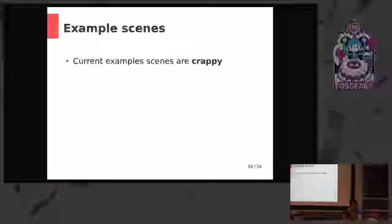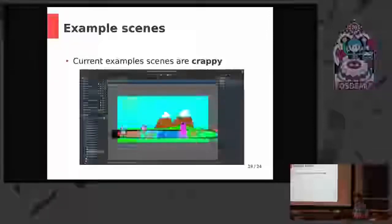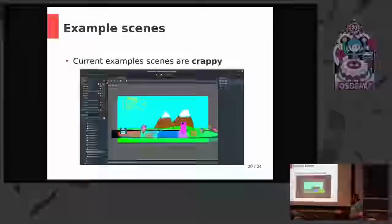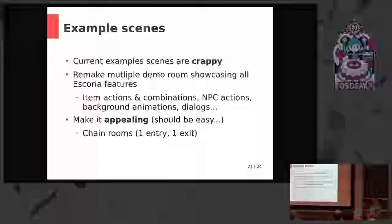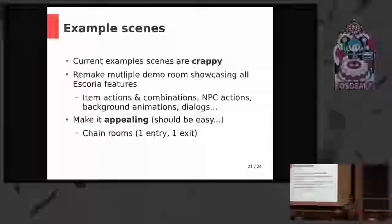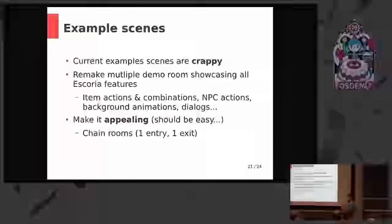To finish, the example scenes. Currently Escoria comes with a few example scenes, which are crappy. We want something different — make multiple demo scenes showing different features of Escoria. That can be animation in the background in one scene, side-scrolling in another scene. If one example room is able to showcase only one feature at a time, it's easier for users to dive into Escoria and use it. And of course make it a little bit more beautiful, because if I see the current state for the first time, I'd run away. So that's the basic idea. This is a lot of work, and it has just started.